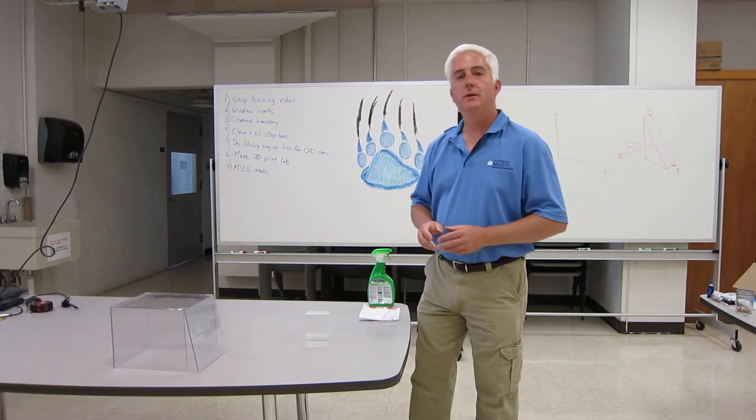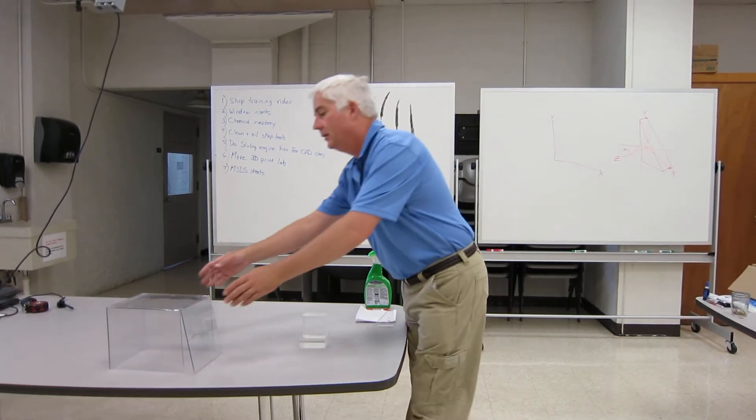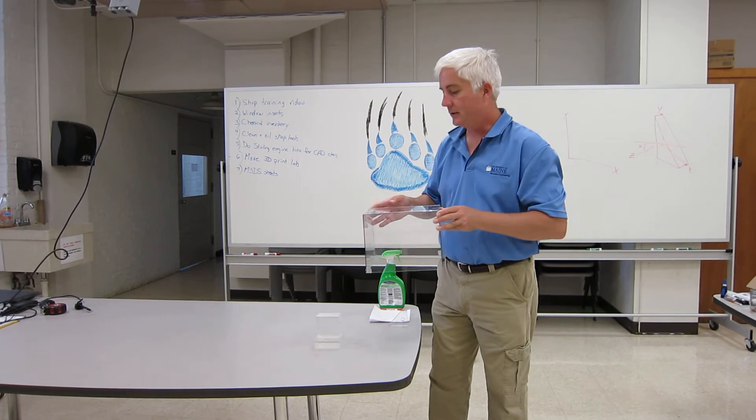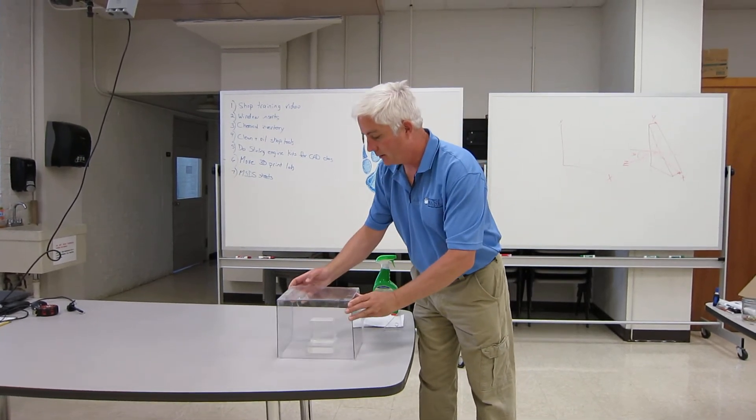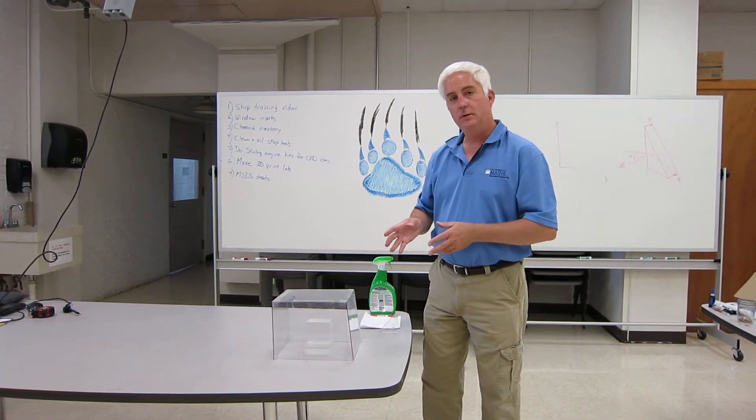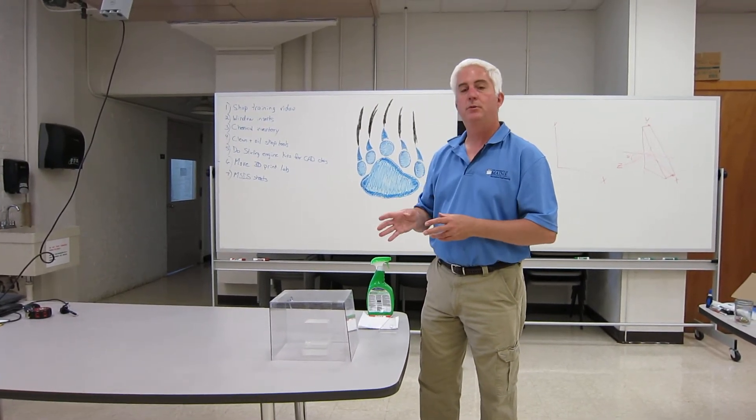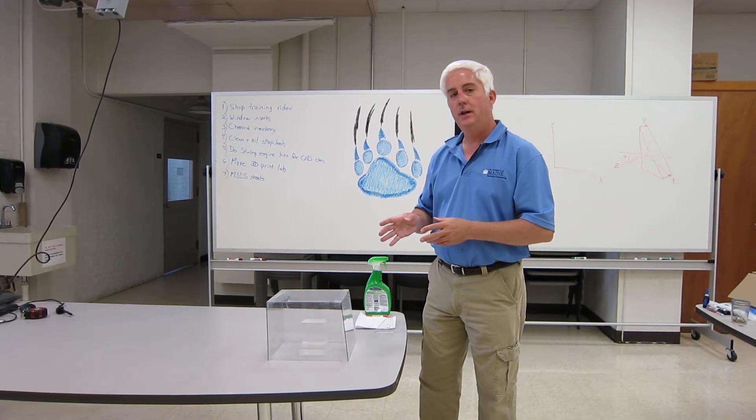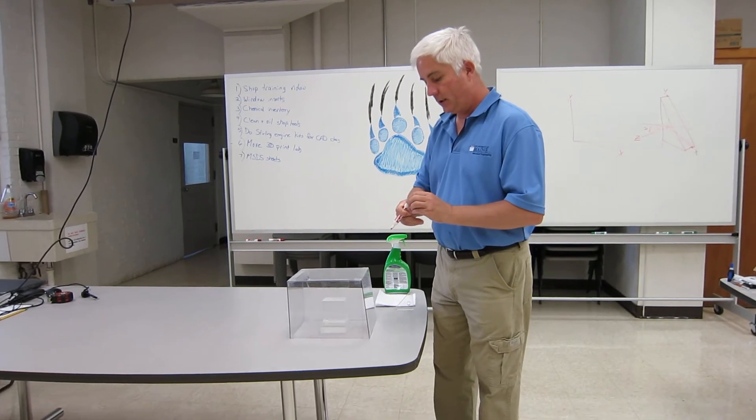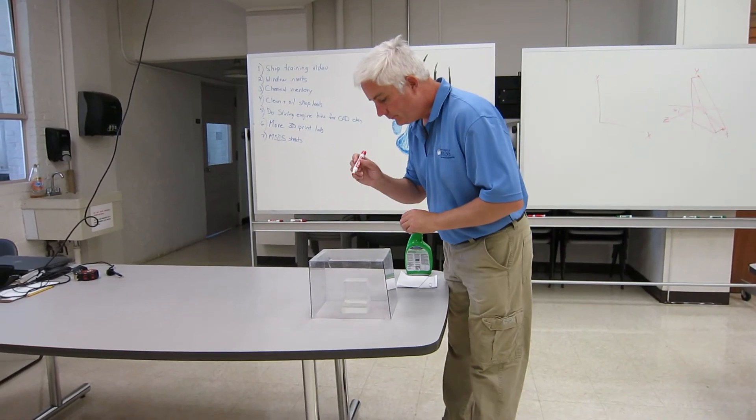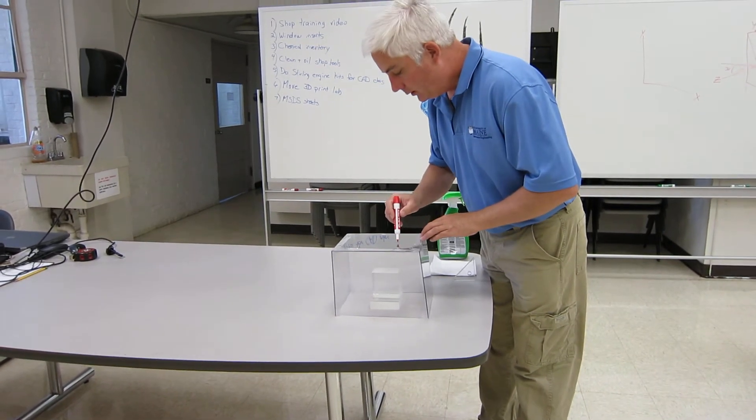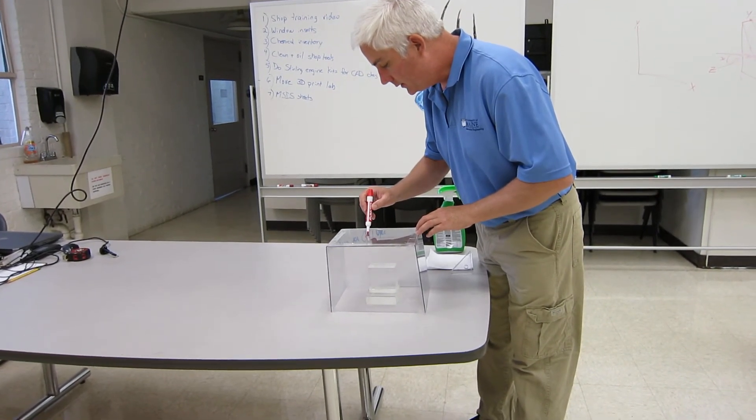We're going to use something called the glass box theory. And lo and behold, I just happen to have a glass box. So we're going to put our glass box over the object. Now, to convert that 3D object to 2D, what I'm going to do is I'm going to project all of the edges onto the glass box. So I'll take my dry erase marker, and I'm looking directly down in, and I'm going to draw the edges that I see.